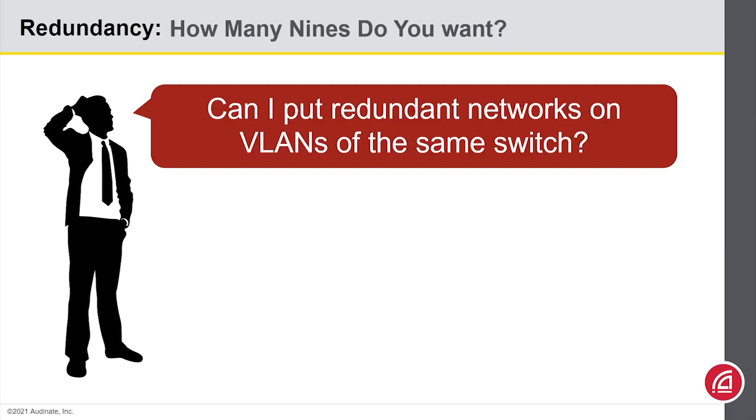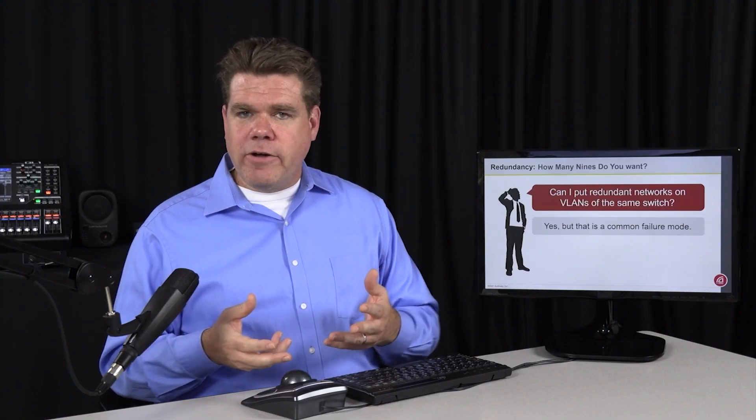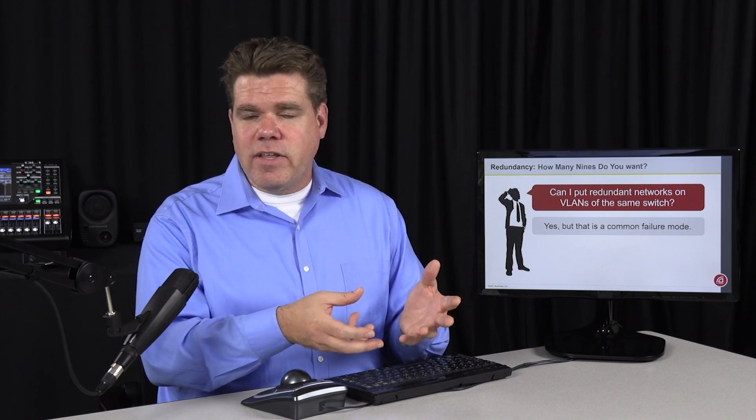So finally, we often get a question about whether we can use a common switch for both primary and secondary networks, just split them on different VLANs. Yes, that will work, but that will create a common failure point in the design, right? If the power was to go out, it would take down that switch with your primary and secondary VLANs on it.